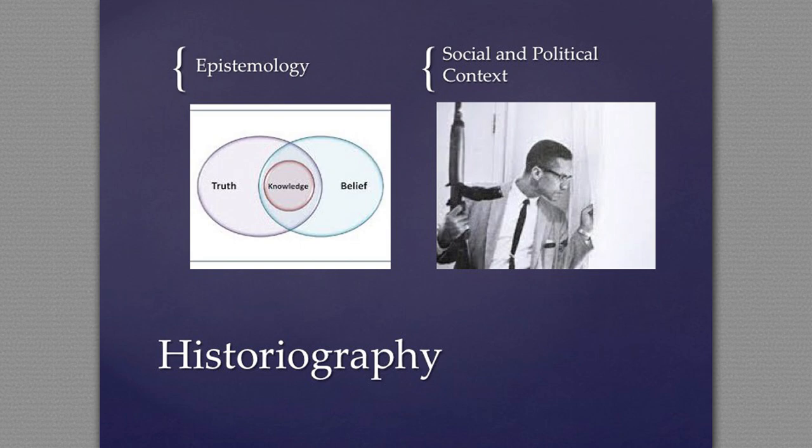This lecture will build on the first lecture by going over the history of history. I want you to think of two concepts that really drive the way that history is written. One is epistemology, and the other is how social and political context change the writing of history. So epistemology and social and political context both change the way that history is written.